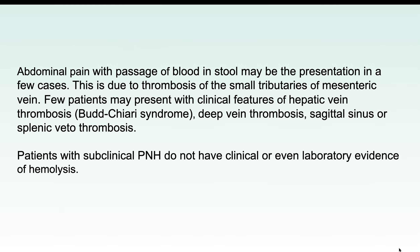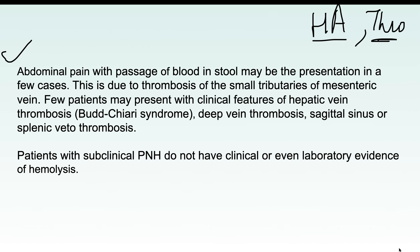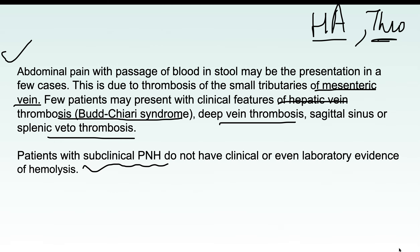The second symptom is abdominal pain, which can be due to thrombosis. PNH is a clinical syndrome involving both hemolytic anemia and thrombosis. Thrombosis occurs in mesenteric veins and their small tributaries. The patient can also present with hepatic vein thrombosis (Budd-Chiari syndrome), deep vein thrombosis, and splenic vein thrombosis.